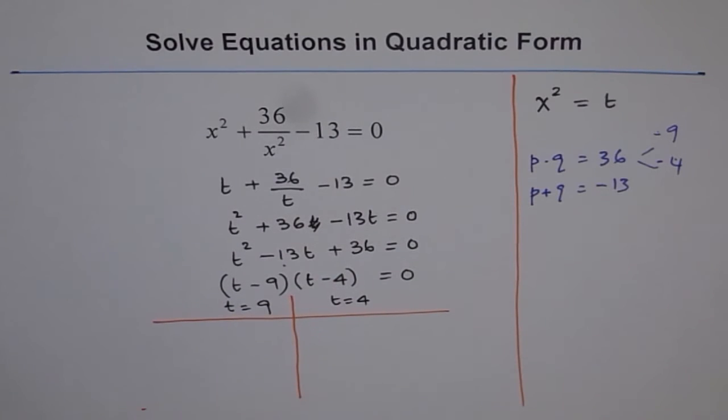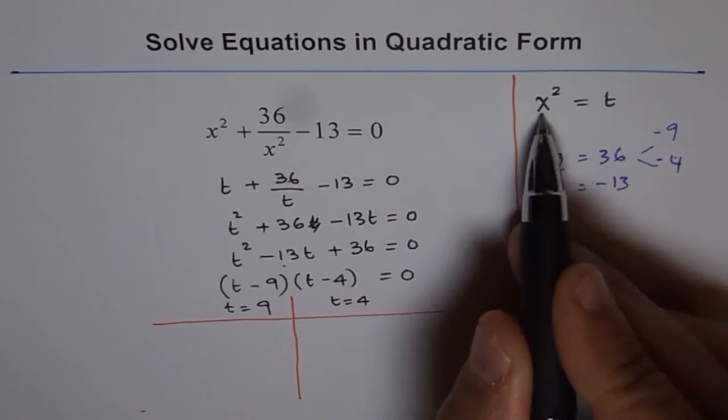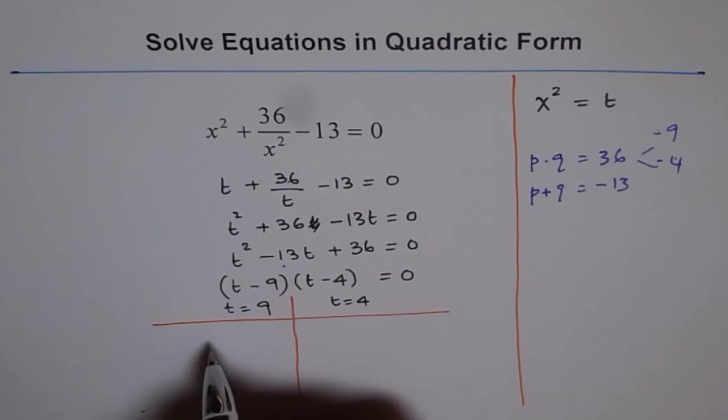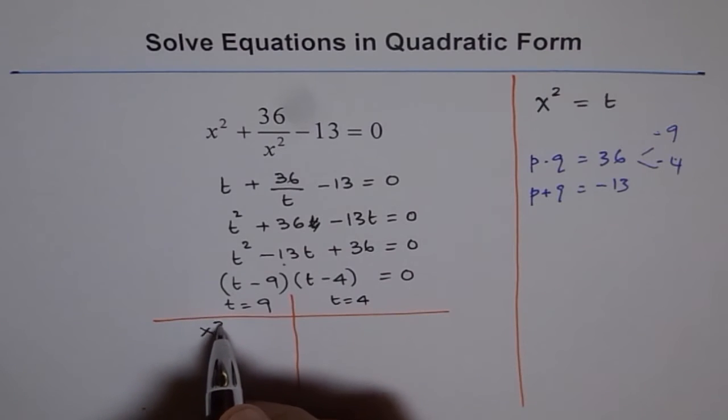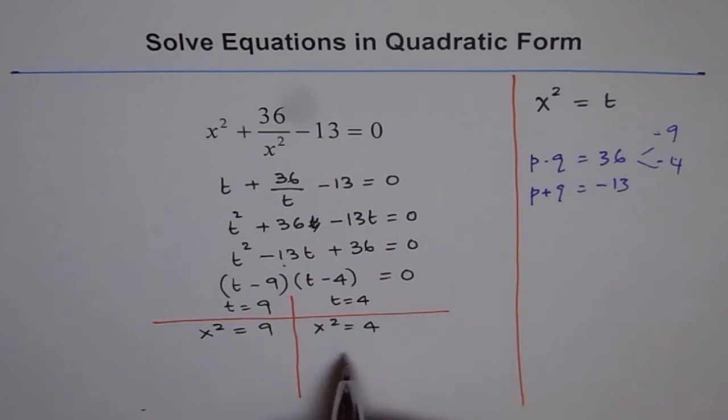What is t? We really want to find what x is. Now, if t is 9, then the value of x squared is also 9, right? So, t is 9. That means our substitution x squared is t. So, we can write this as x squared equals 9 or x squared equals 4. Now, let's solve both and find possible values of x.